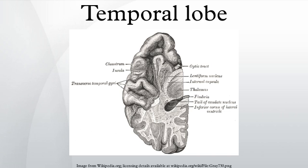Function: Visual memories. The temporal lobe contains the hippocampus and plays a key role in the formation of explicit long-term memory modulated by the amygdala.